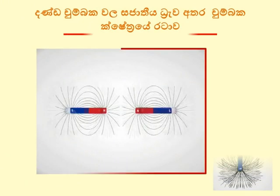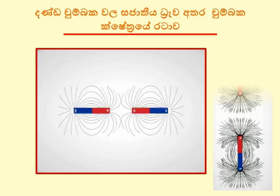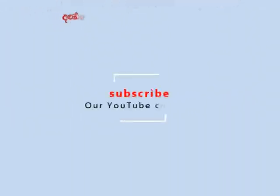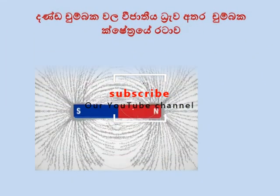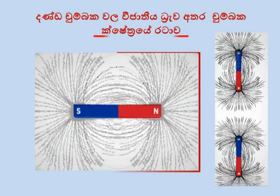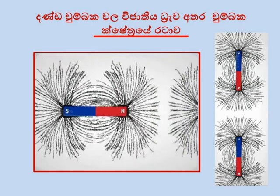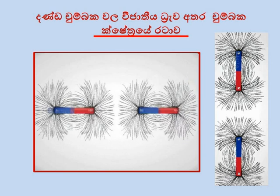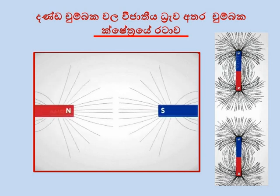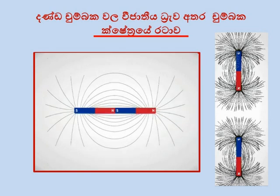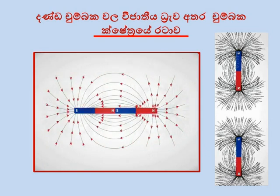Similarly, the field lines of the same poles repel each other. When a pair of magnets of opposite poles is placed side by side, the field lines attract each other.